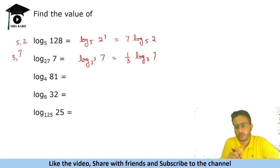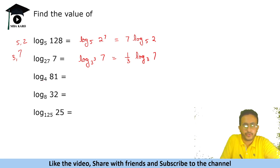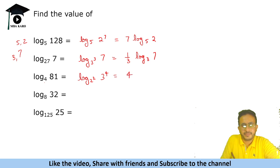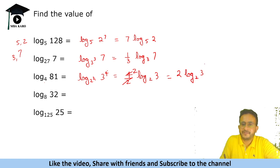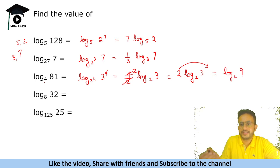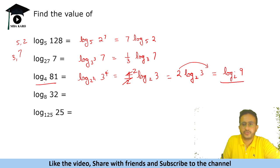Let us take log base 4 of 81. Here 4 is 2 squared and 81 is 3 to the power 4. The 4 comes to the numerator and 2 goes to the denominator, so it becomes (4/2)·log base 2 of 3, which is 2·log base 2 of 3. Now this is equivalent to log base 2 of 3 squared, which is log base 2 of 9. So log base 4 of 81 equals log base 2 of 9.